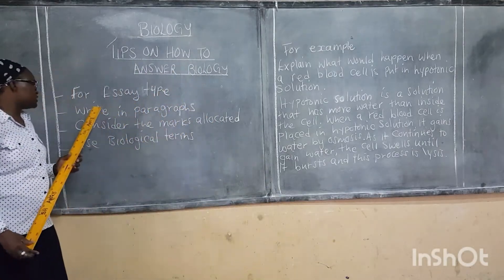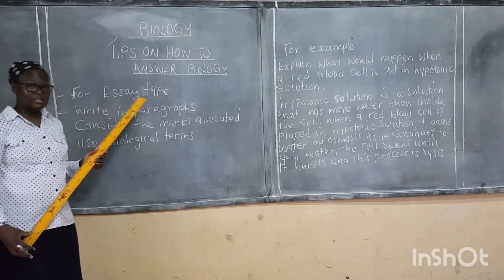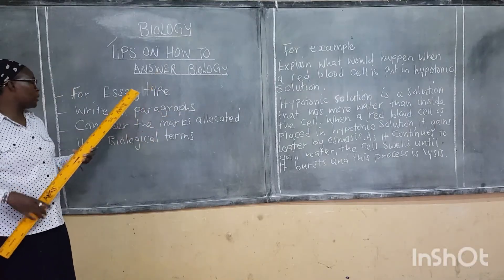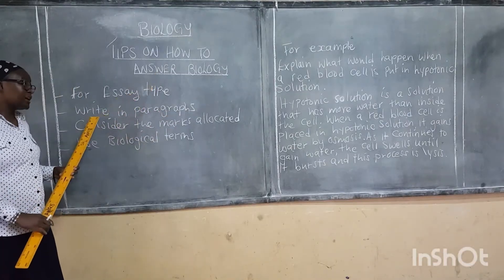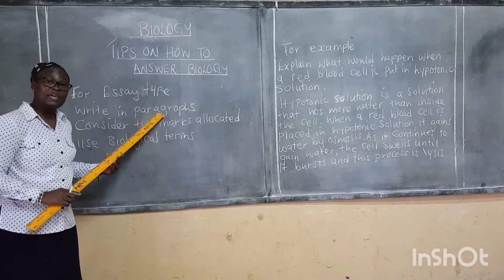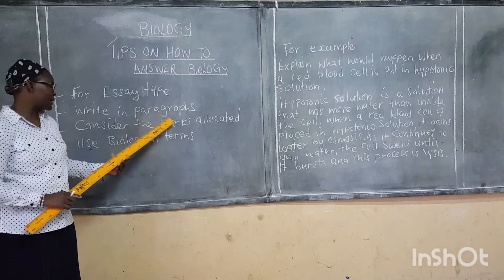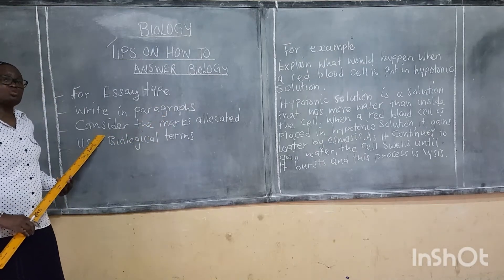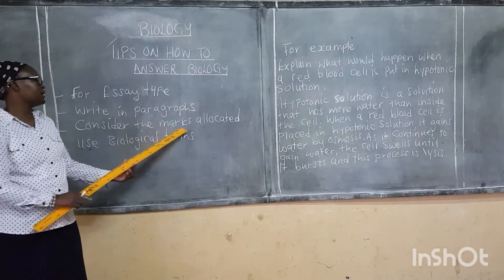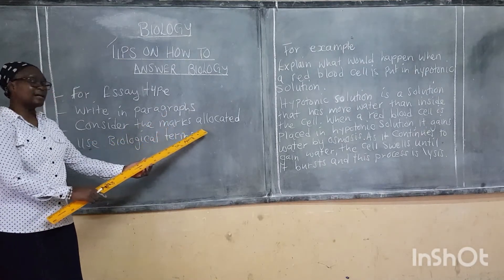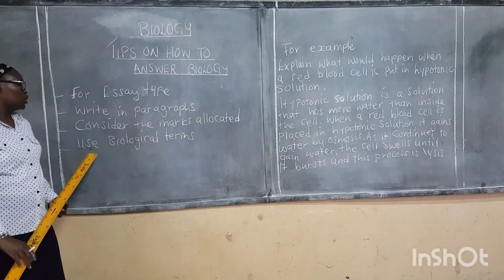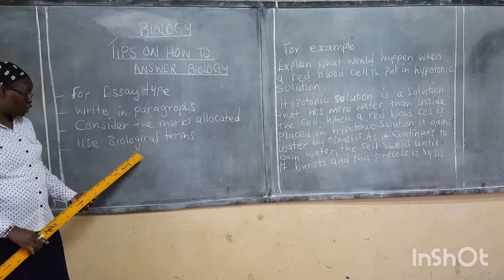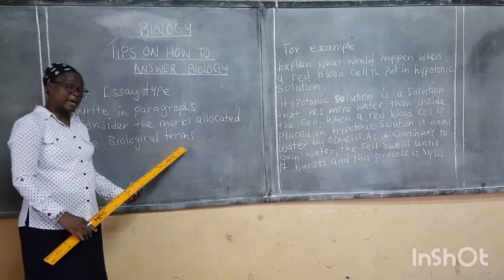So the first thing is: you need to understand the question — that's the number one thing. Then you need to write the essay in paragraphs. You also need to consider the number of marks or location of marks. You also need to use biological terms.